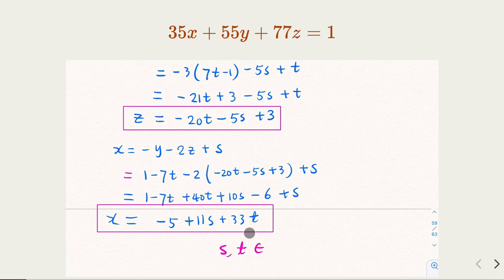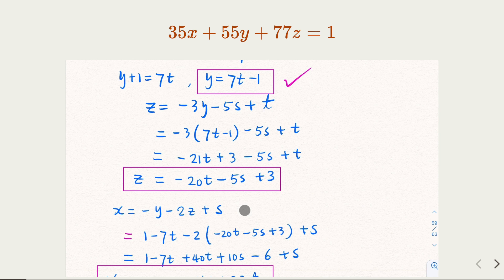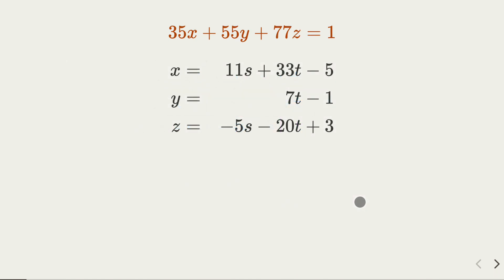So we're done — we've expressed everything in two parameters s and t. We solved the equation using this method by finding the coefficient with smallest absolute value and reducing through three major steps, expressing x, y, z in terms of parameters s and t, where s and t can take any integers. The solution looks different from Method 1's result, but both cover all possible solutions.